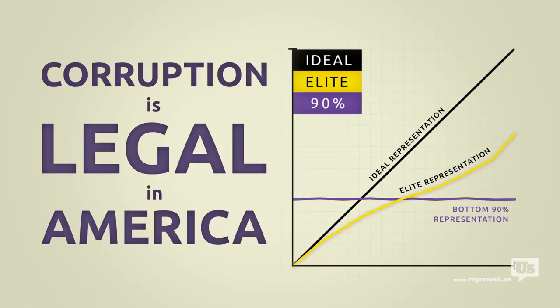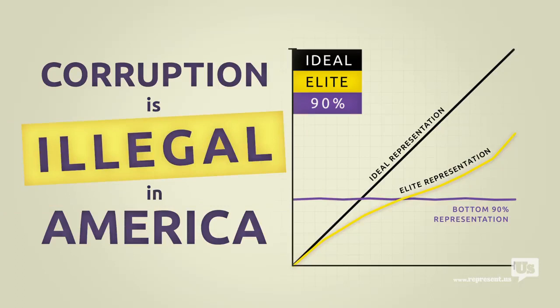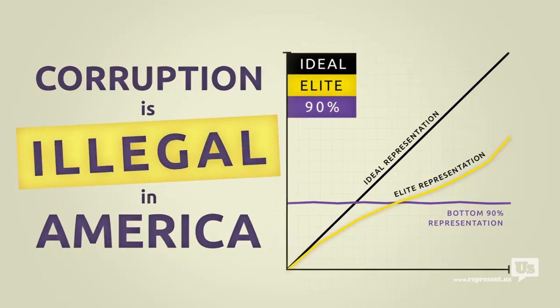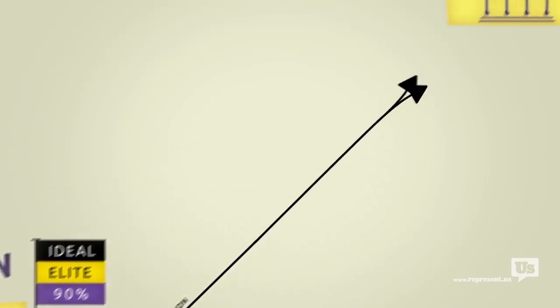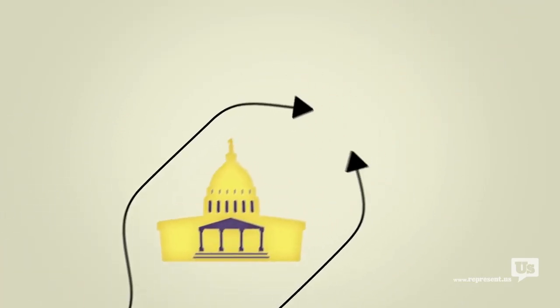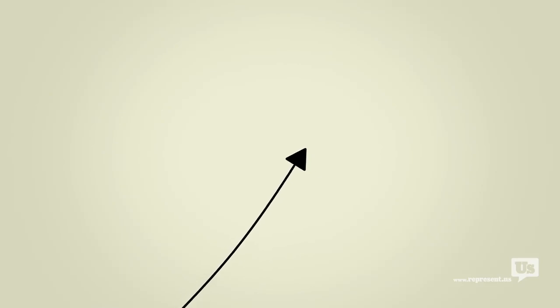And as long as it is, anyone who can spend money to buy political influence will. The solution here isn't rocket science. Make corruption illegal. We already know Congress won't do it. I mean, one look at this chart will tell you that. What we need is a plan that lets us go around Congress and do what the American people do best. Fix this mess ourselves.